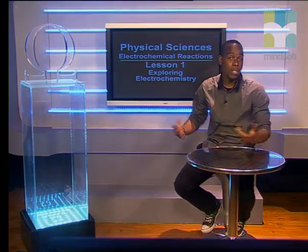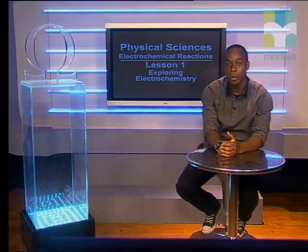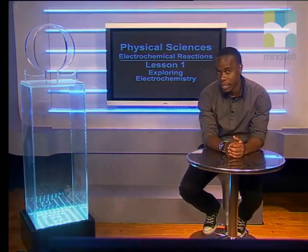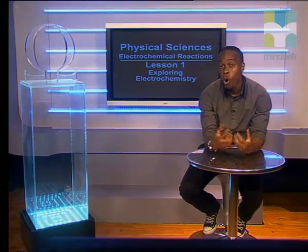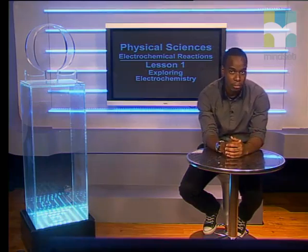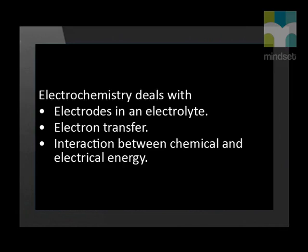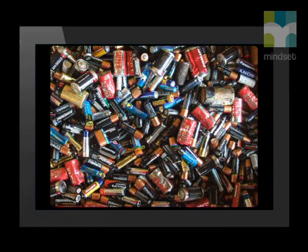Hello. Today we start our series on electrochemical reactions. What is electrochemistry? Have you ever wondered how chemicals can produce electricity, or how electricity can produce a chemical reaction? Electrochemistry is a branch of chemistry that studies chemical reactions which take place in a solution at the electrode in an electrolyte. This involves electron transfer between the electrode and the electrolyte in solution.